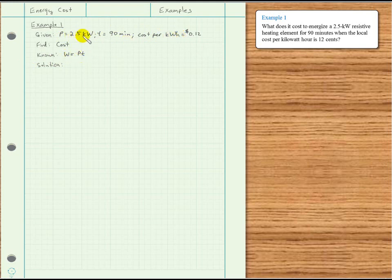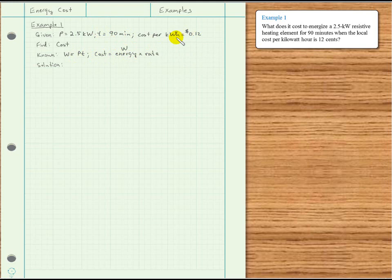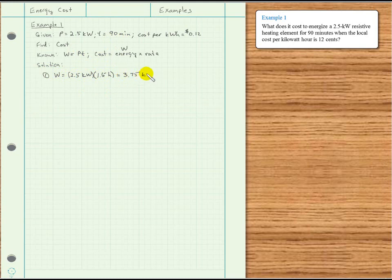Power is already in kilowatts, but time is in minutes, so we'll have to convert that to hours. Once we find the energy, we can find the cost as energy times the rate of 12 cents per kilowatt hour. For the solution, energy W equals power 2.5 kilowatts times time — 90 minutes is one and a half hours — giving us 3.75 kilowatt hours.